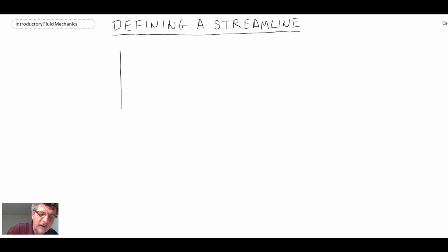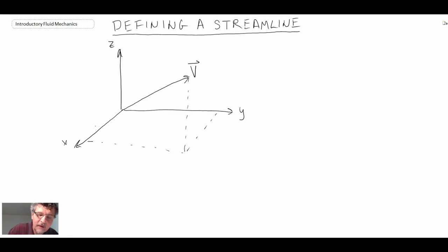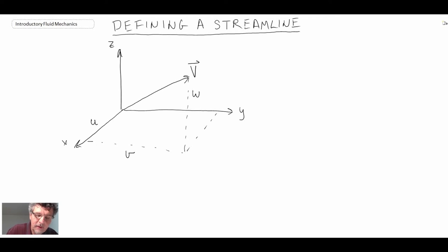To begin with, let's draw out our coordinate system. We have the z-axis in the vertical, and x and y in the horizontal. We're going to assume that we have some arbitrary velocity vector. In the x-direction, this velocity vector will have a velocity component u; in the y-direction, it will have a velocity component v; and in the z-direction, it will have a velocity component w.